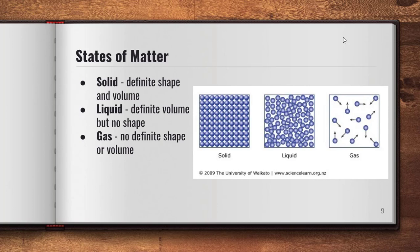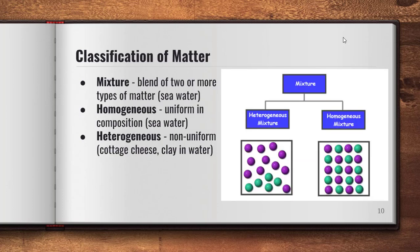Now we're looking at different states of matter — different ways that matter can exist. There are three main types (there's actually a fourth called plasma, but we won't deal with that in this class). A solid has a definite shape and definite volume — like my pen. A liquid has a definite volume but no definite shape; it takes the shape of whatever container it's in — think of water poured into a glass. A gas has no definite shape or volume; gas can be compressed, as in oxygen tanks or tires.